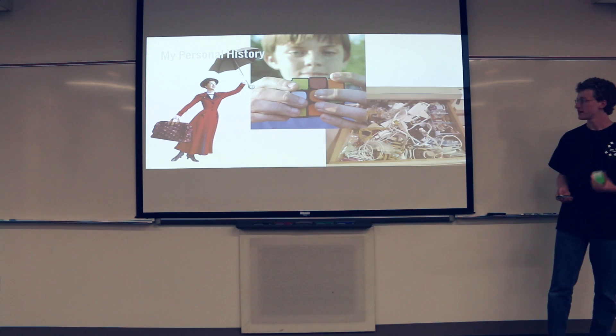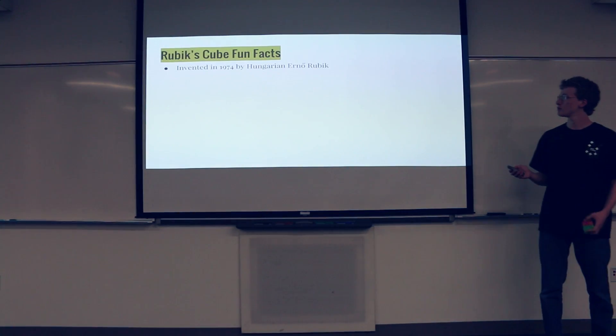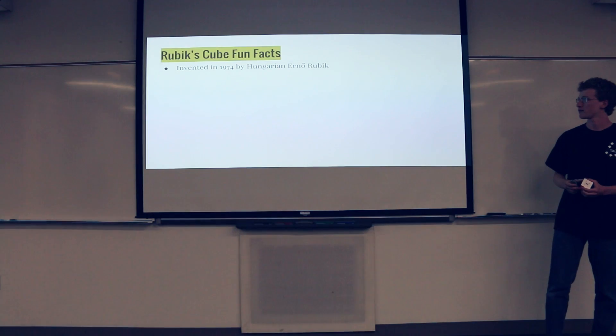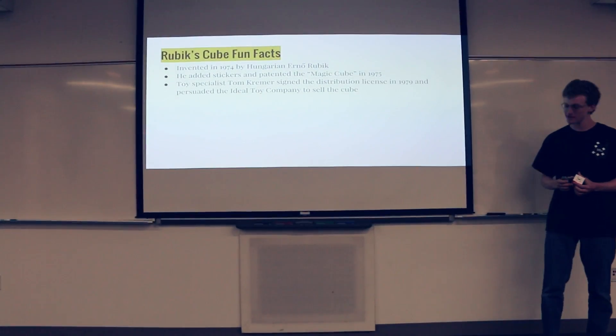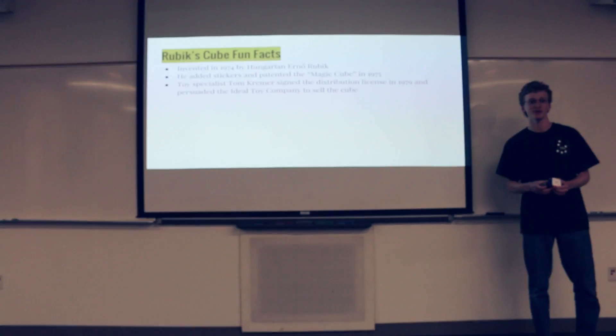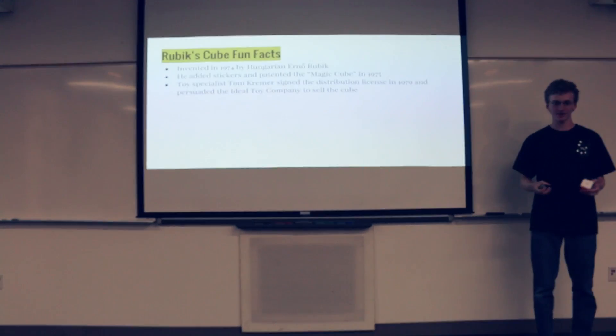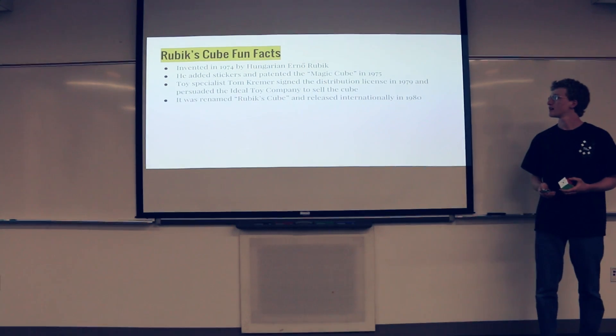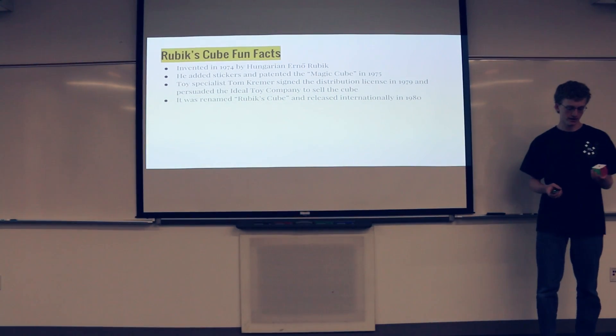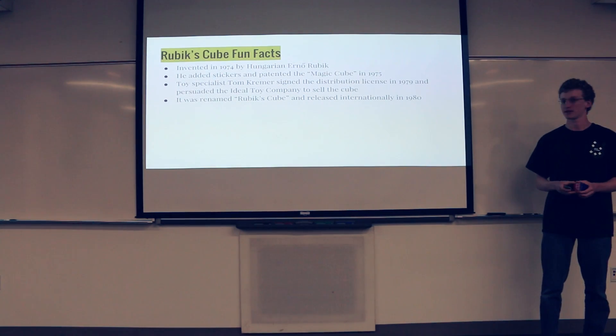And that was kind of the beginning, and since then I've gotten even more into cubes and trying to solve it as fast as possible. So the Rubik's Cube was invented in 1974 by a professor of architecture in Budapest, patented in 1975. A toy specialist named Tom Creamer, that sounds like a really awesome job, I think. He really pushed the first major marketing effort, got it on market. And then it had originally been called the Magic Cube, but it's not actually magical. So it was renamed Rubik's Cube for its international release.